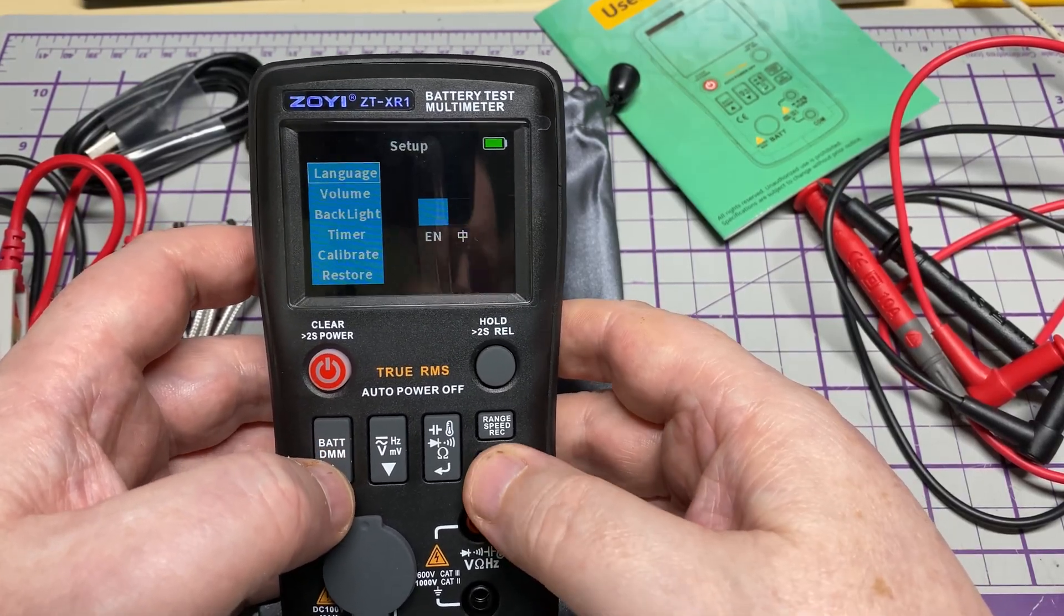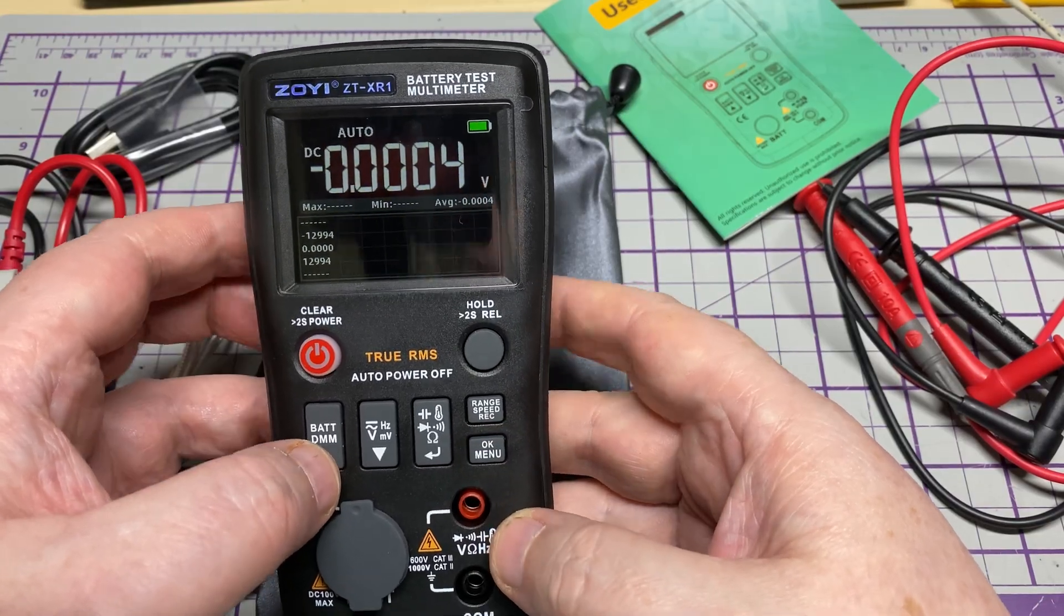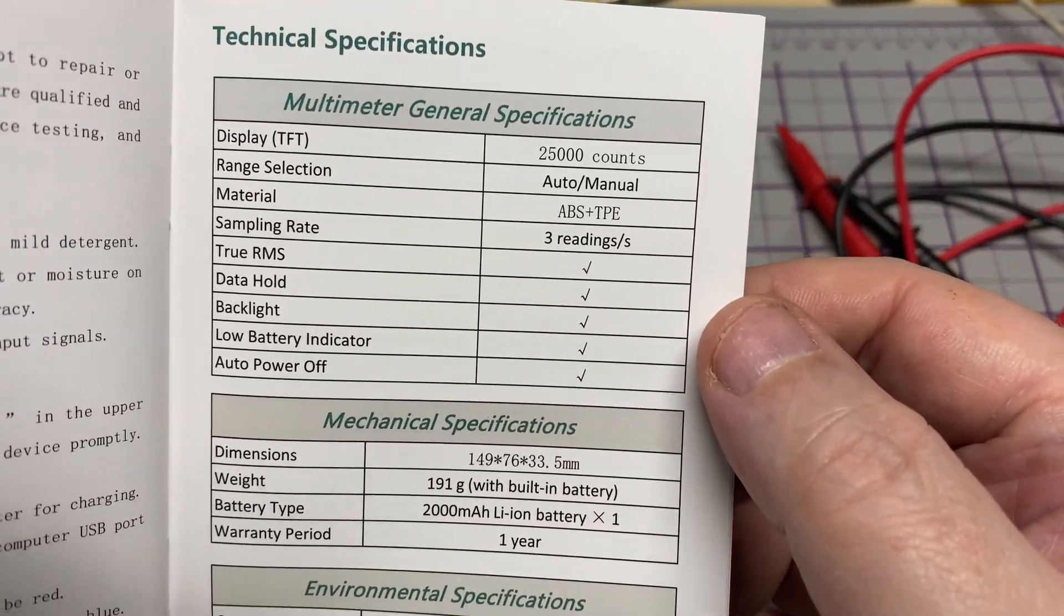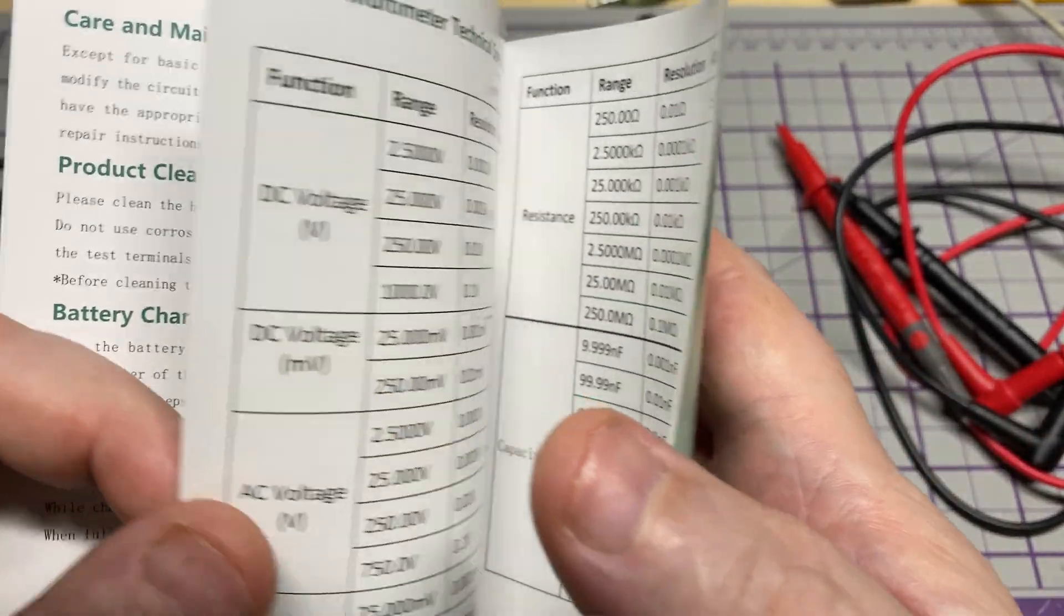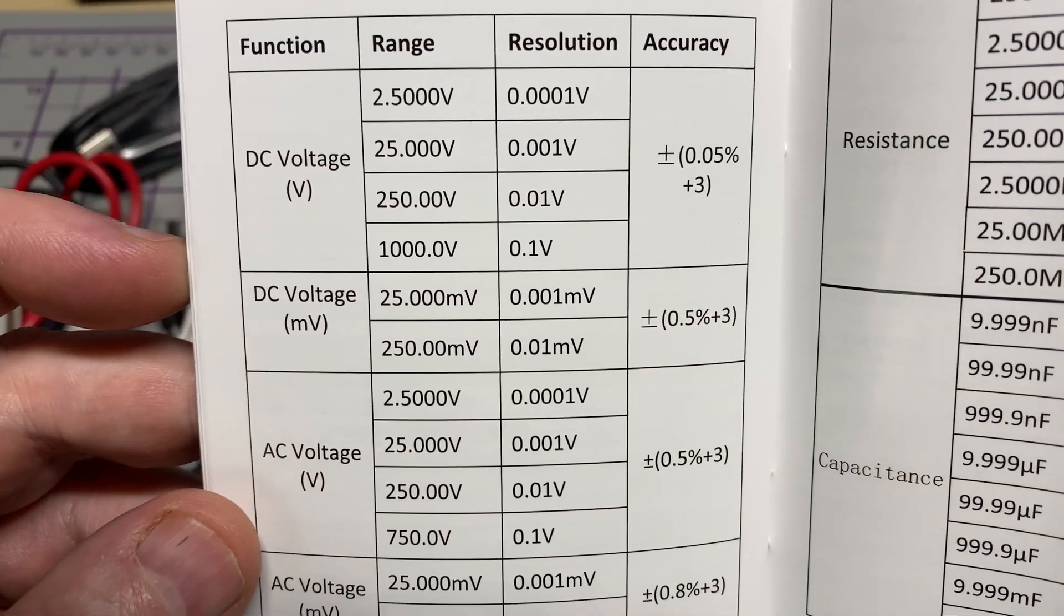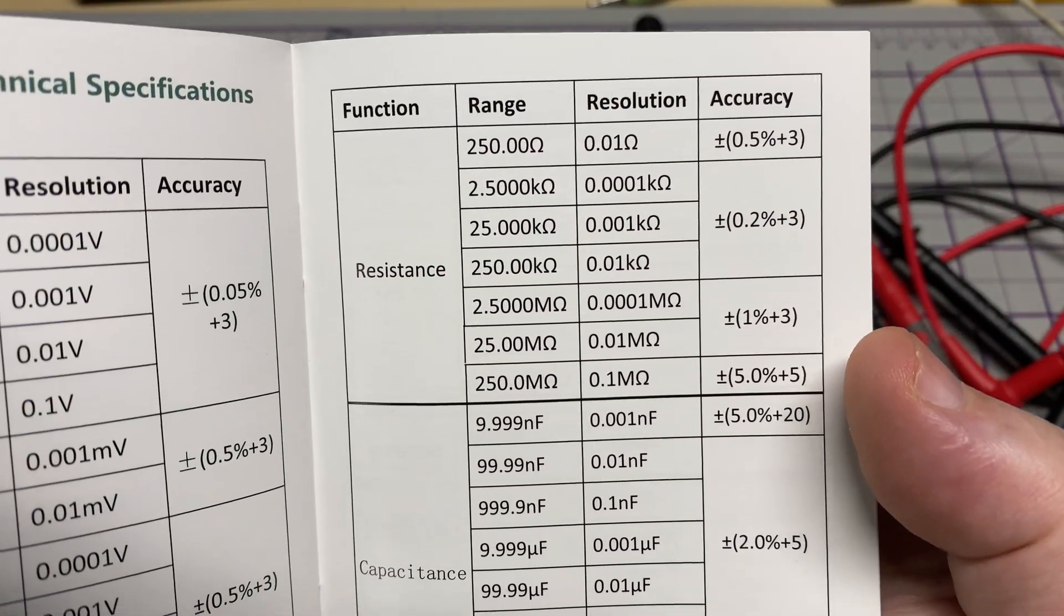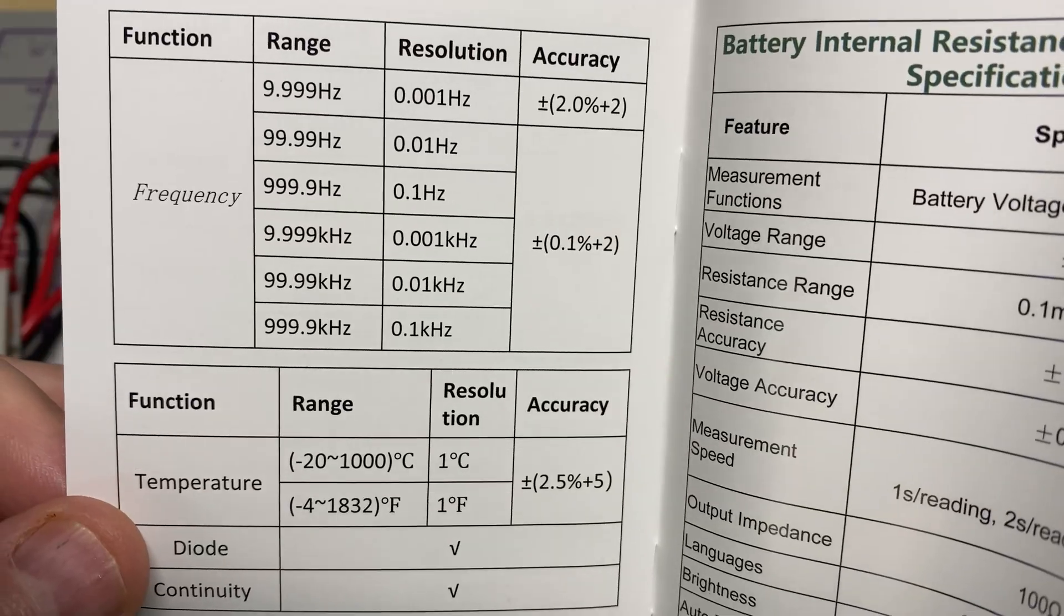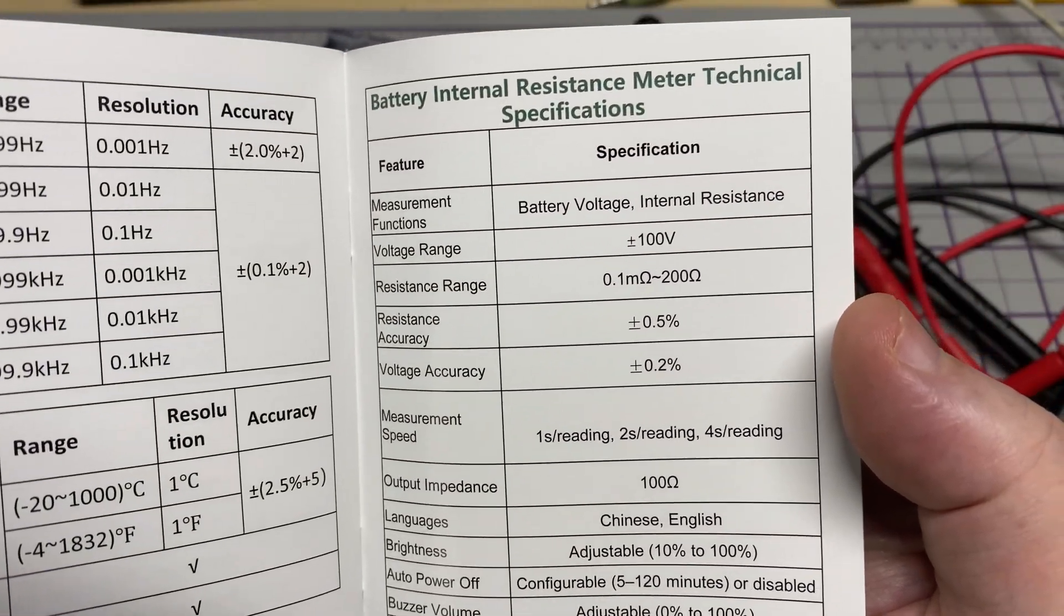Nothing overly exciting in the menu system - power off timer, backlight, beep volume, language. Nothing too special there. 25,000 counts, this will do true RMS. DC voltage goes all the way to a thousand volts, AC volts to 750 volts, resistance, capacitance, and frequency. Obviously temperature, continuity.